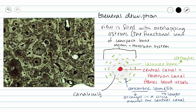A canaliculus is a tiny canal — that's what the word means. This tiny canal is going to connect our osteocytes with the central canal so that our osteocytes can receive nutrients and dissolved gases and get rid of their wastes in exchange with the blood vessels housed in the central canal.